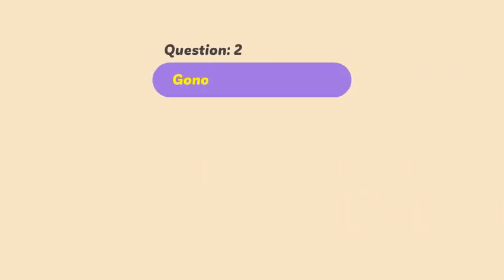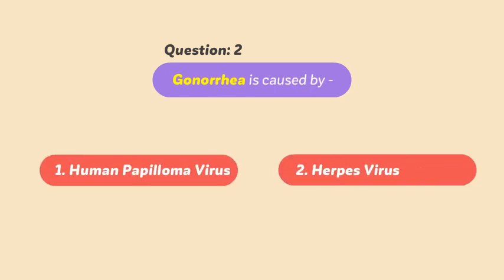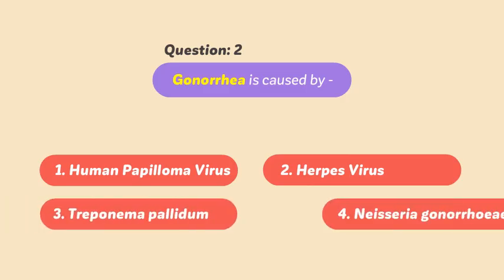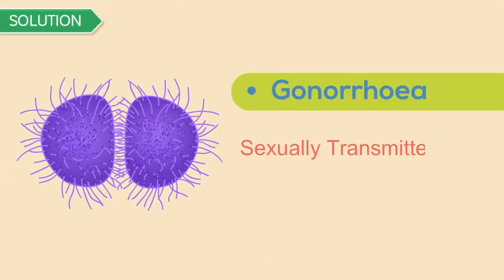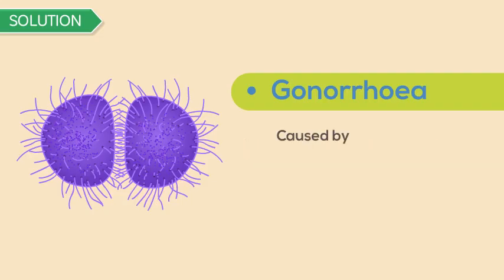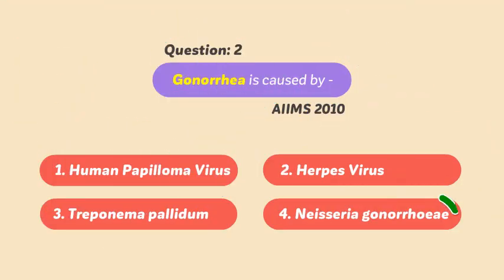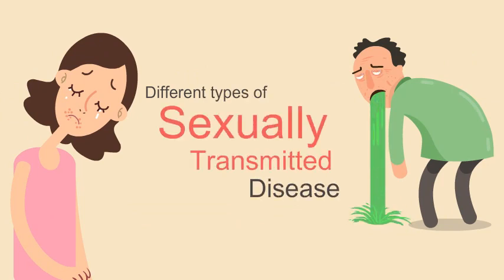Question 2: Gonorrhea is caused by (1) Human papilloma virus, (2) Herpes virus, (3) Treponema pallidum, (4) Neisseria gonorrhea. This question was asked in AIIMS 2010. Solution: Gonorrhea is a sexually transmitted disease caused by the bacterium Neisseria gonorrhea. Hence Option 4 is the correct answer.